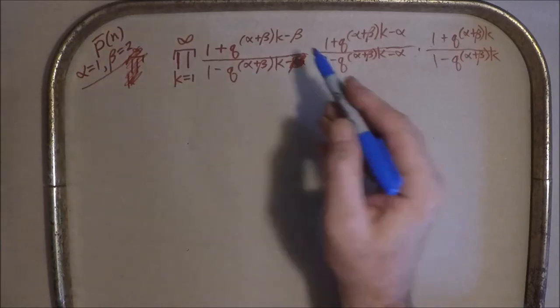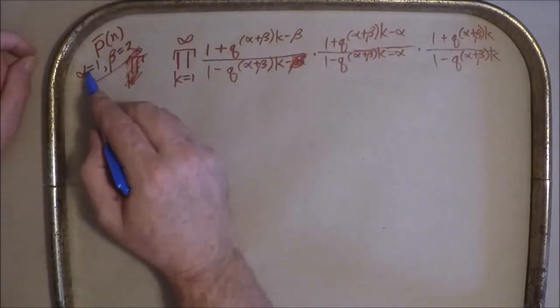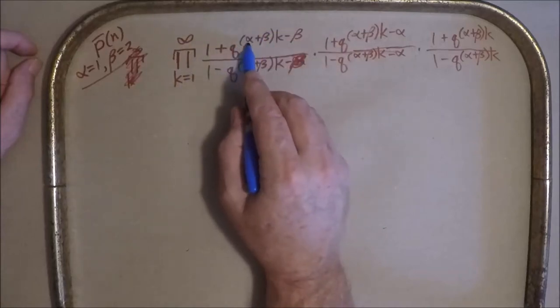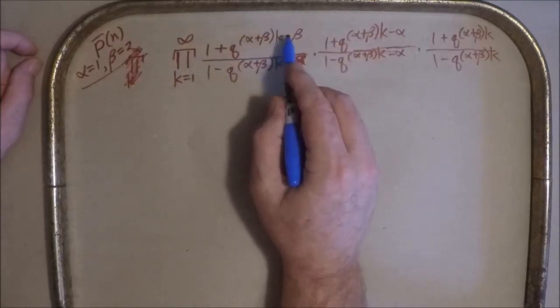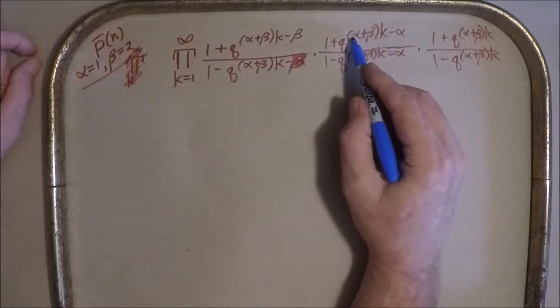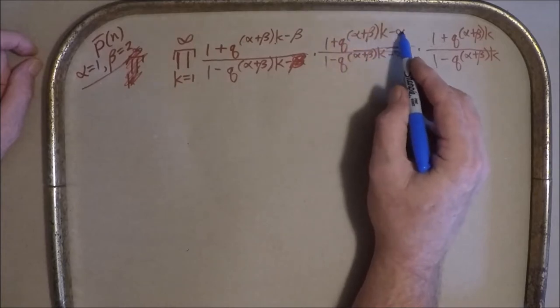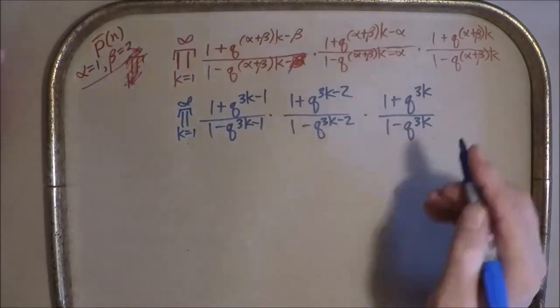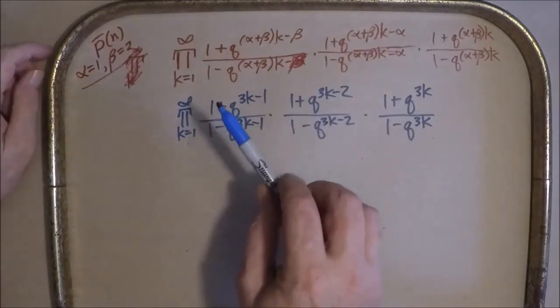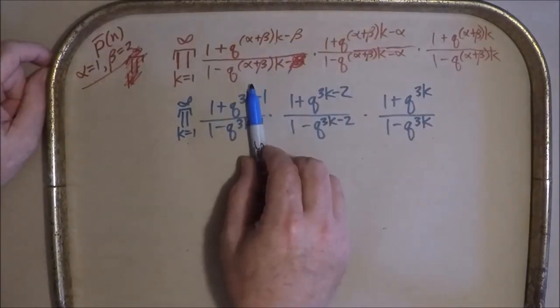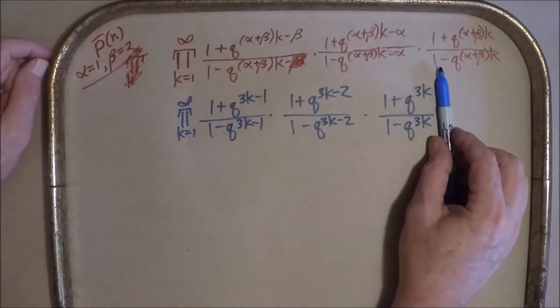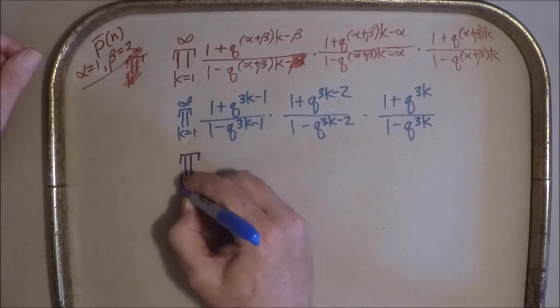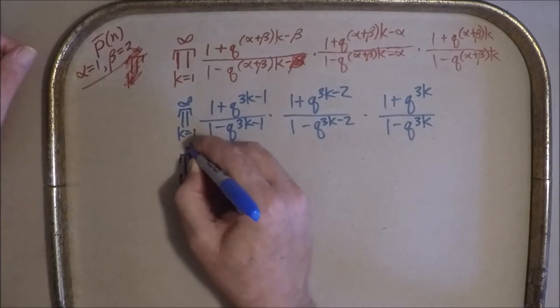Okay. This is more like it. So starting with this form and alpha equals one, beta equals two. Here we're going to get three K minus two. Here we're going to get three K minus one. And here we're going to get three K. It's not hard to see that this covers all positive integers.